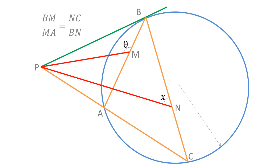From the graphical information given, we don't know initially a relation between X and theta. We could try to relate the unknown X and the parameter theta with other parameters in the problem. At first glance, it seems we can only obtain the measures of the adjacent angles at M and N, which would be 180 degrees minus theta and 180 degrees minus X, respectively. We need to analyze the graphical information to see if we can relate X and theta with other parameters in the figure.